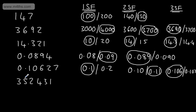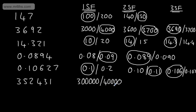If we look at 352,431 to one significant figure, this is the hundreds of thousands. So we're going to have 300,000 or 400,000. We can see that the five afterwards means that I'm going to round up to 400,000.